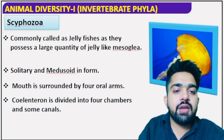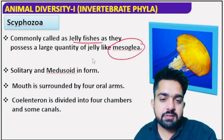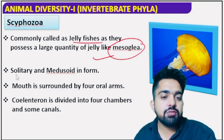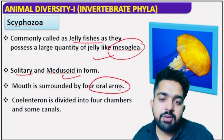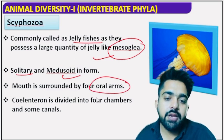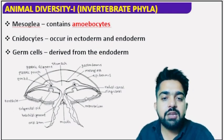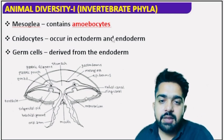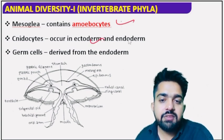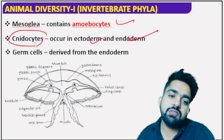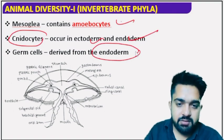The next class is Scyphozoa, which contains jellyfish — organisms with abundant mesoglea. The solitary form is common, and the medusoid form is dominant. On the mouth side there are four lobes. The coelenteron is divided into four chambers. Inside the mesoglea, amoebocytes are present — undivided cells. Cnidocytes can arise both ectodermally and endodermally. Germ cells are of endodermal origin.